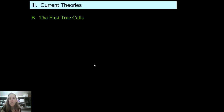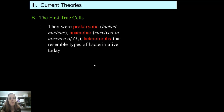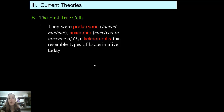Cells are part of a living organism. The first cells were prokaryotic, which means they lacked a nucleus. They were anaerobic, which means that they were able to survive without oxygen. And they were heterotrophs that resemble types of bacteria that are alive today.